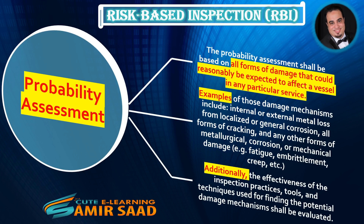Probability Assessment. The probability assessment shall be based on all forms of damage that could reasonably be expected to affect a vessel in any particular service. Examples of those damage mechanisms include internal or external metal loss from localized or general corrosion, all forms of cracking, and any other forms of metallurgical, corrosion, or mechanical damage — e.g., fatigue, embrittlement, creep, etc. Additionally, the effectiveness of the inspection practices, tools, and techniques used for finding the potential damage mechanisms shall be evaluated.